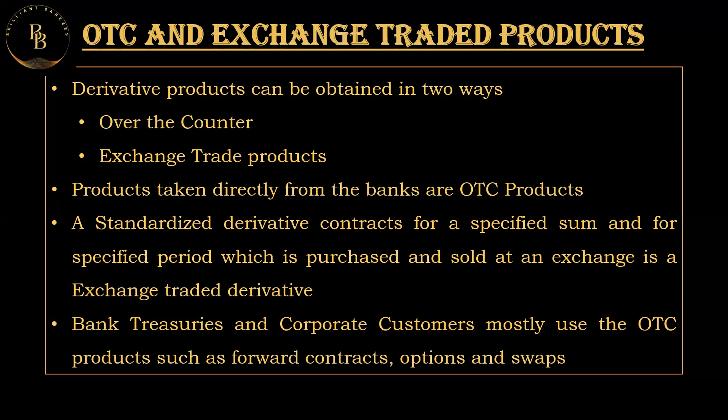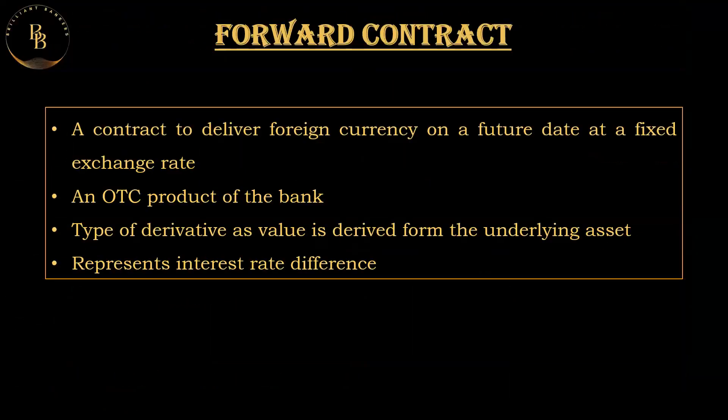A standardized derivative contract for a specified sum and specific period, purchased and sold at an exchange, is called an exchange-traded derivative. Bank treasuries and corporate customers mostly use OTC products such as forward contracts, options, and swaps. Let's discuss what forward contracts, options, and swaps are.